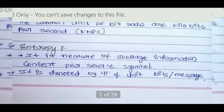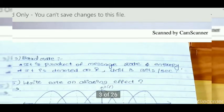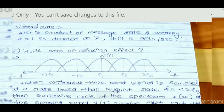Entropy is a measure of average information — the average information content per source symbol. It is denoted by H and has units of bits per message. Baud rate is the product of message rate and entropy, denoted by R, with units of bits per second.